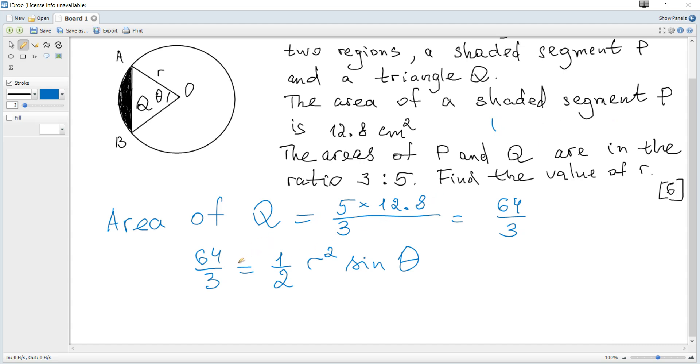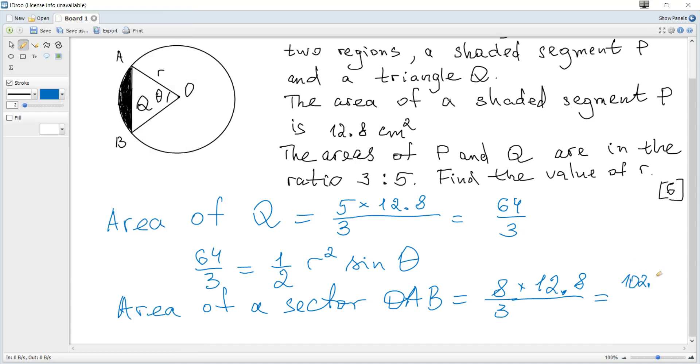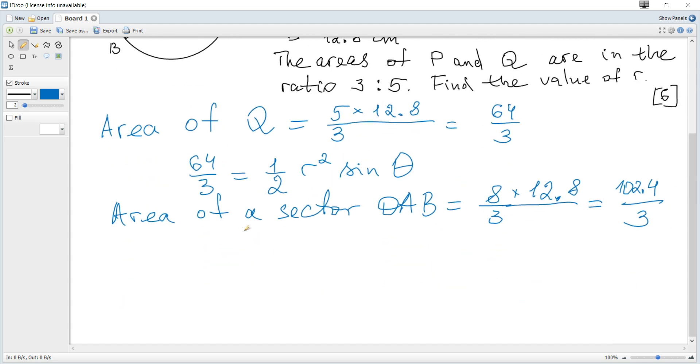Hence, we get that area of sector OAB is 8 over 3 times 12.8, and it's 102.4 over 3. And we know that the area of a sector is a half radius squared times theta. And theta must be in radians. And we get simultaneous equations.